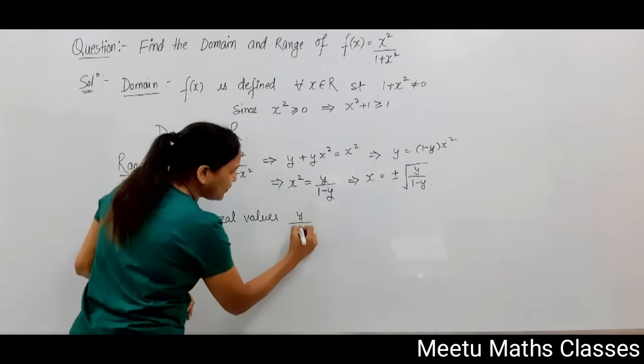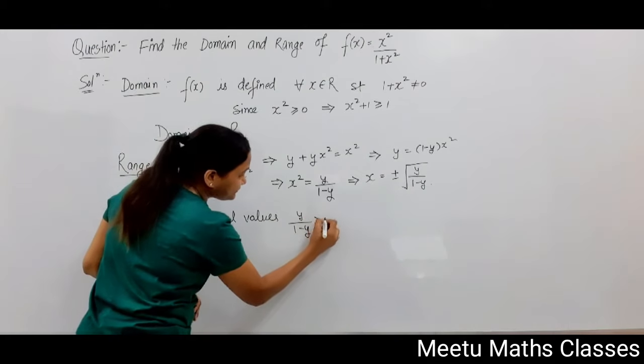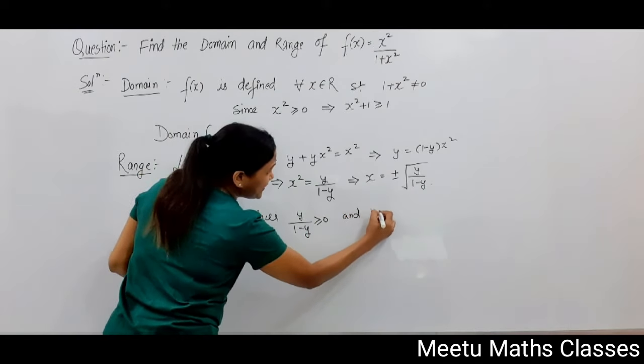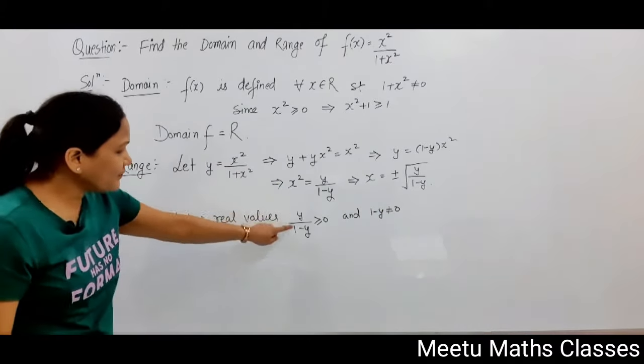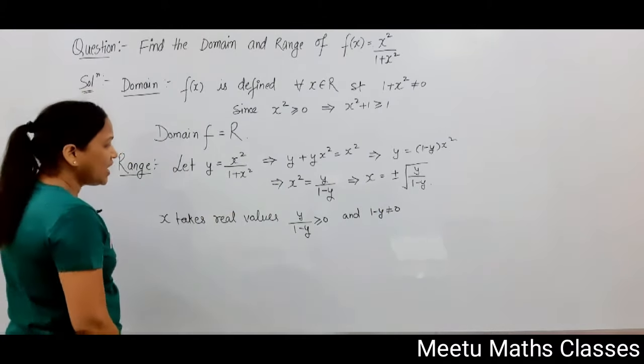First of all, y / (1 - y) should be positive, and the denominator should be non-zero.